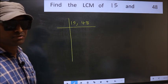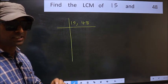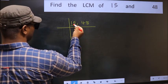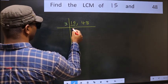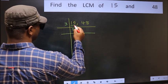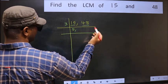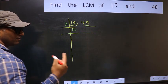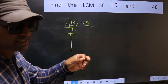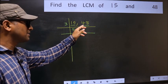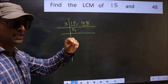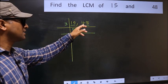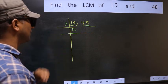Now focus on the first number, which is 15. 15 is 3 fives 15. The other number is 48. To check whether it is divisible by 3 or not, add the digits: 4 plus 8 gives 12, and 12 is divisible by 3. So 48 is also divisible by 3.